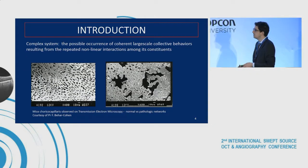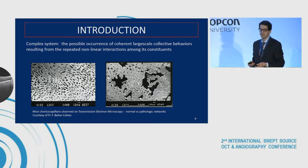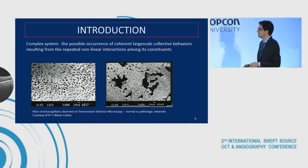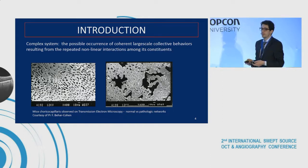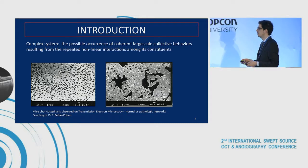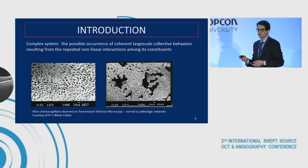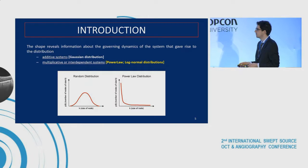We know that the choriocapillaries, due to its complex dynamics, can be compared to a complex system, being the flow voids the principal agents of this system, and they are very different in animal models, in both health and in disease. A basic thing to characterize a complex system is to characterize its constituents and its agents, to measure them, and to plot their distribution to foresee what's happening in our system. Dr. Spade has talked about the difference between additive systems and multiplicative systems.